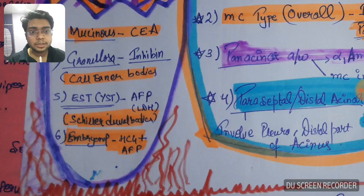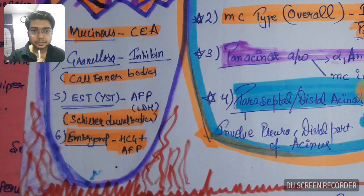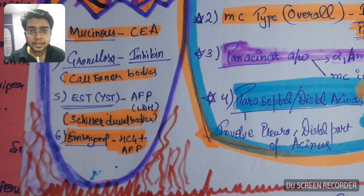EST or embryonal cell tumor is AFP or LDH containing Schiller-Duval bodies. The embryonal, EST is endodermal sac tumor or yolk sac tumor, is AFP alpha-fetoprotein or LDH. Endodermal sac tumor contains Schiller-Duval bodies.